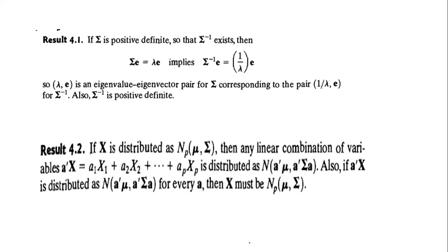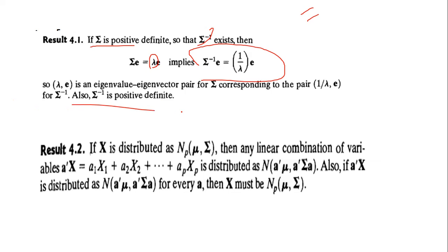If sigma is positive definite — meaning all eigenvalues are positive and the matrix is symmetric — then sigma inverse exists, because when all eigenvalues are positive the determinant is nonzero. If sigma*e equals lambda*e, where lambda are the eigenvalues, then sigma-inverse*e equals (1/lambda)*e. This is the standard result. Lambda and e are the eigenvalue-eigenvector pair of sigma; correspondingly, sigma inverse is also positive definite.